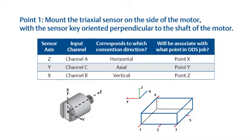This orientation and polarity will be true for points 1, 2, and 3 shown here, because while the location will change, the orientation of the sensor will not. It would be necessary to change the input for points 4 and 5, but that is covered in a separate tutorial. Here we will focus on setting up the analyzer for the ODS or modal job.